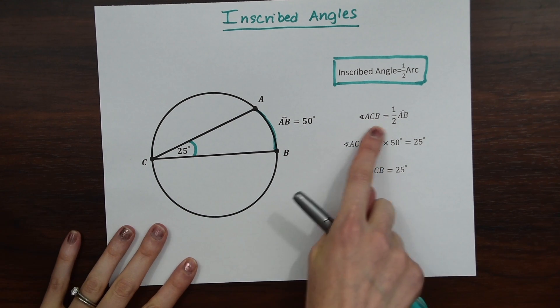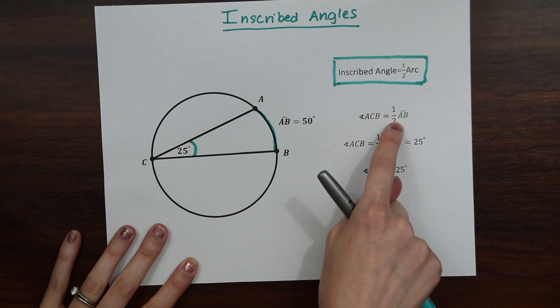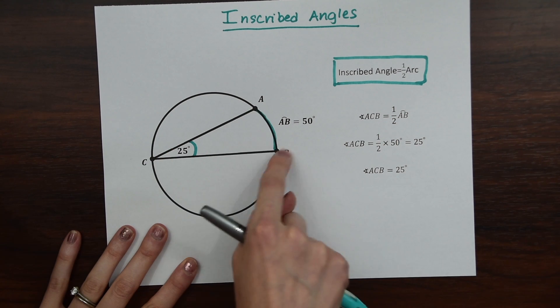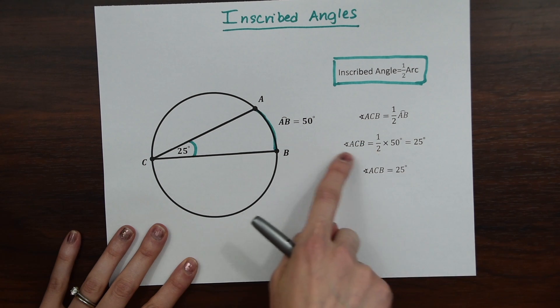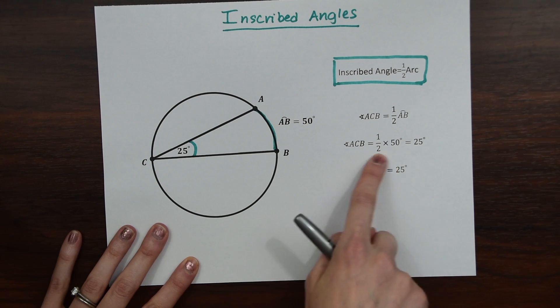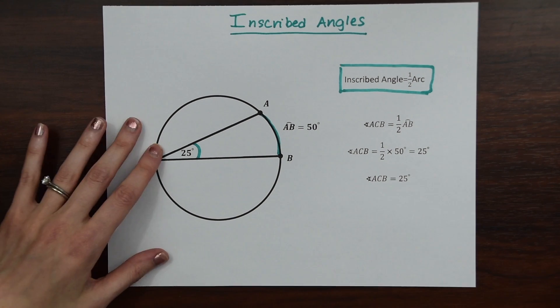So just to break down what this means over here, this is just saying the same thing. We have angle ACB is equal to one half arc AB, and then we're just filling this in because we know that arc AB is 50 degrees, and half of 50 degrees is 25 degrees. So just to break down what the notation means here.